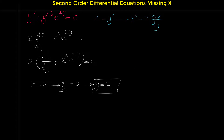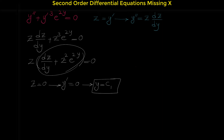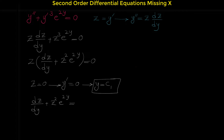Note that because y prime, the derivative of y, is 0, if we integrate to find y, the integral of 0 is 0 and we must add a constant. So y equals c₁ is one solution. The other solution comes from the other factor: we set dz over dy plus z squared e to the 2y equal to 0.